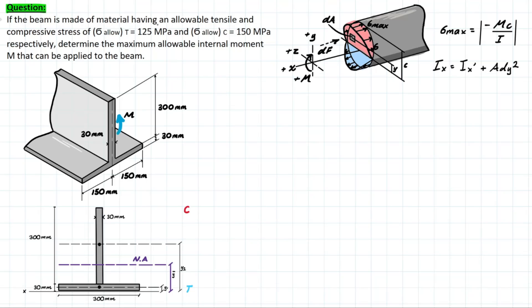If the beam is made of a material having an allowable tensile and compressive stress of 125 MPa for tensile and 150 MPa for compressive, determine the allowable internal moment M that can be applied to the beam. If you haven't seen the previous videos on how to solve problems like this, or you want to learn a bit more about the theory, you can take a look at the top here.